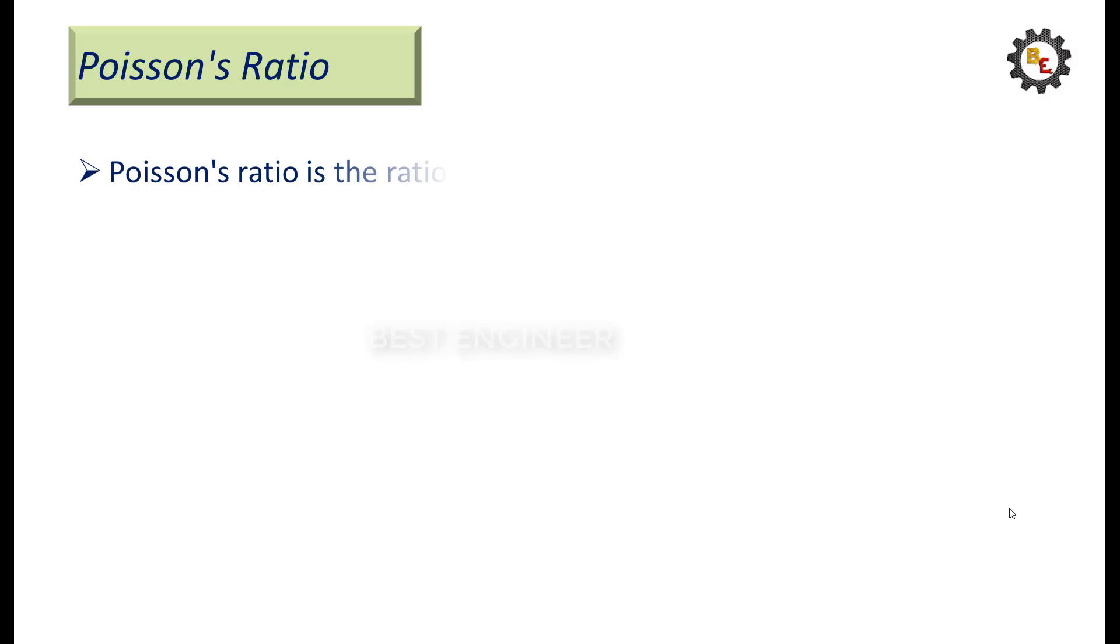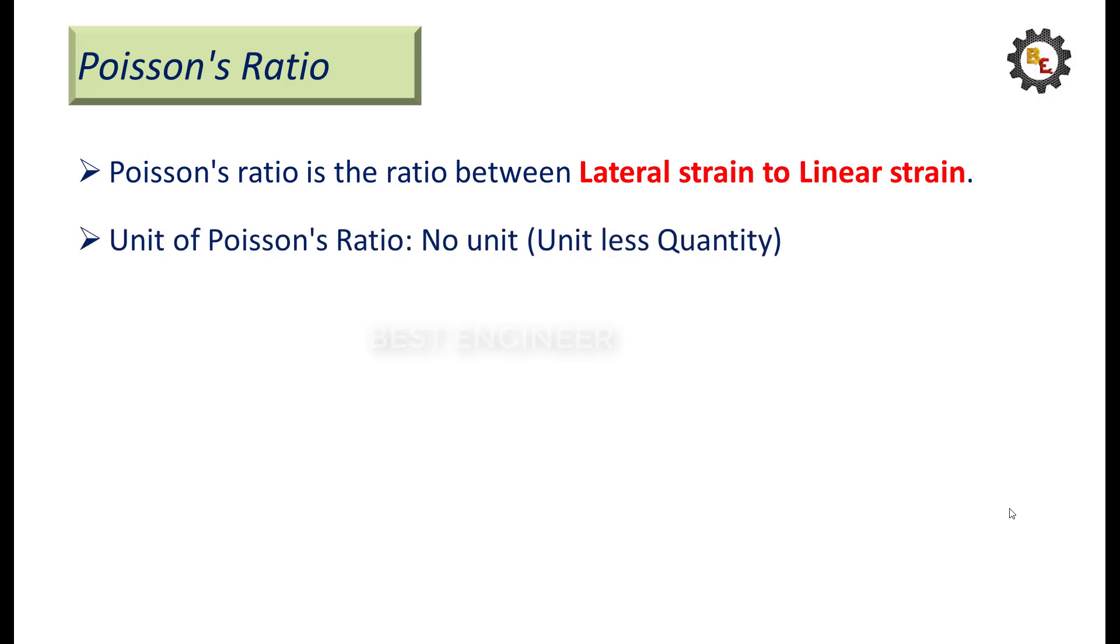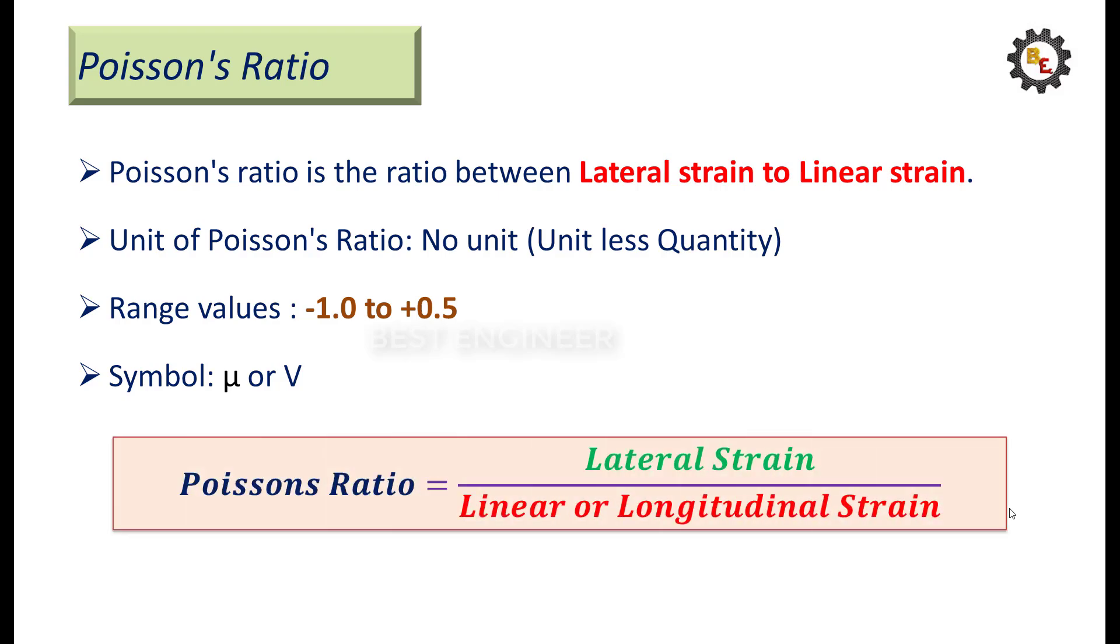Now, let us learn about Poisson's Ratio. Poisson's Ratio is the ratio between lateral strain to linear strain. The Poisson's Ratio does not have any unit. The Poisson's Ratio value will be between minus 1 to 0.5. It is denoted by mu or nu. Mathematically, it is the ratio between lateral strain to linear strain.